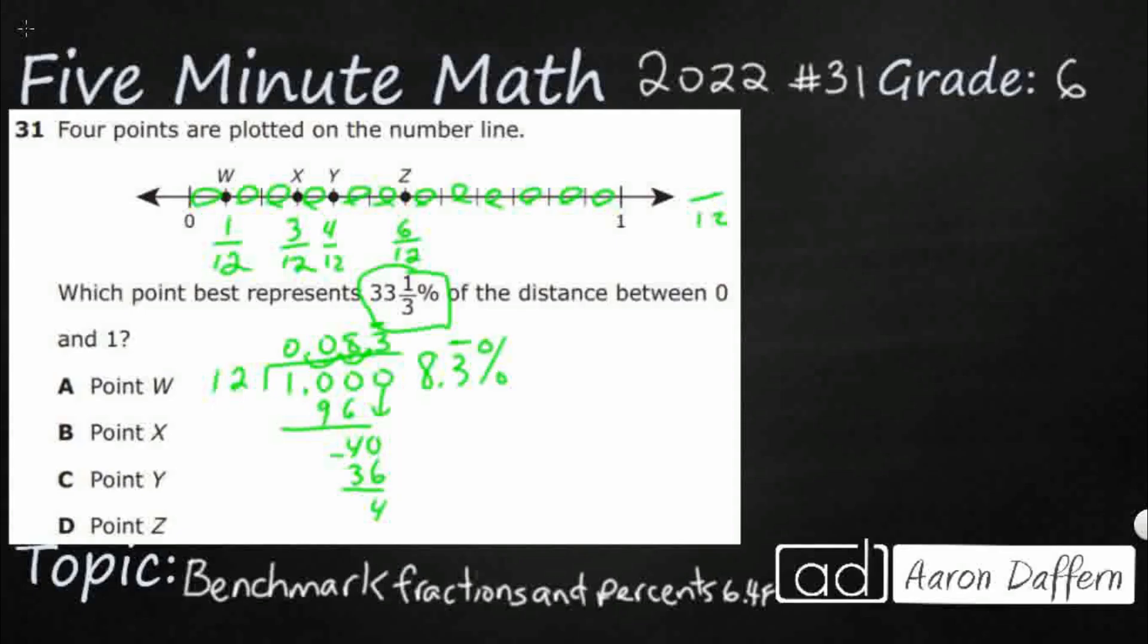Or, this 0.3 repeating also is eight and a third. So, that's where this comes from. When you see this one third, that means 0.3 repeating. So, that's not what I'm looking for, but I am looking for something that's got a 0.3 repeating. So, that's your W right there.